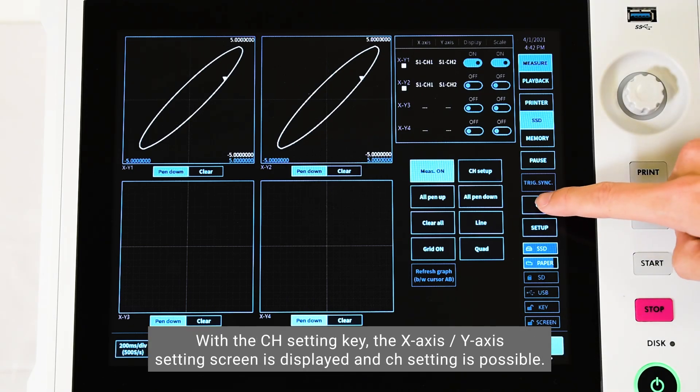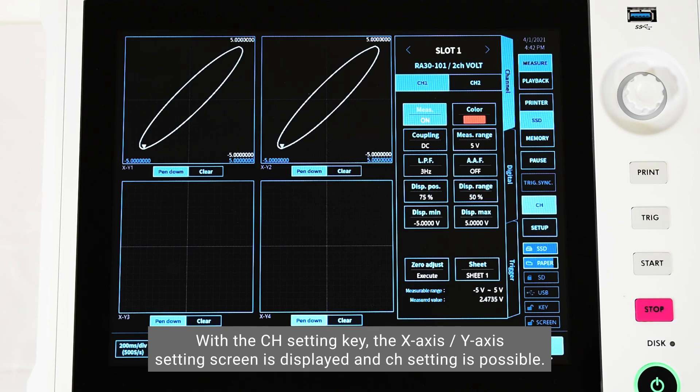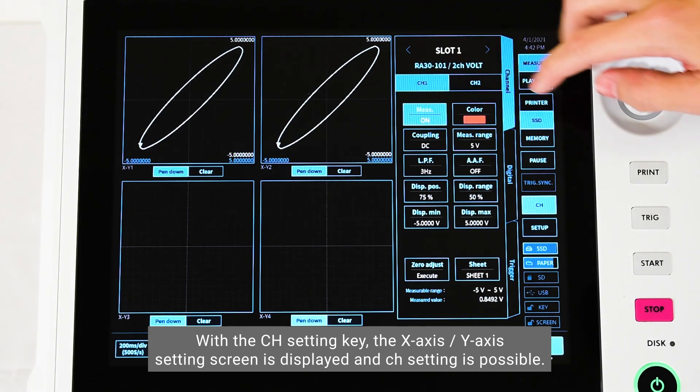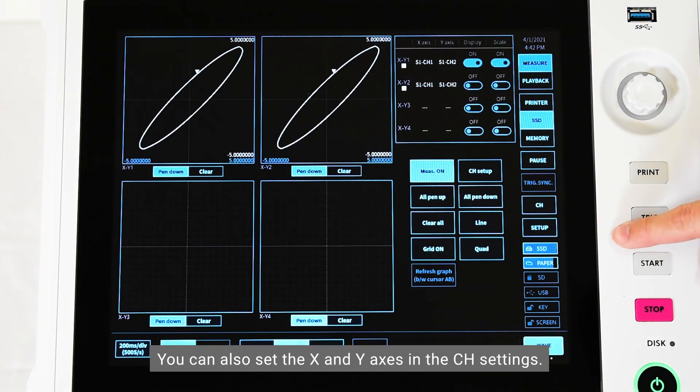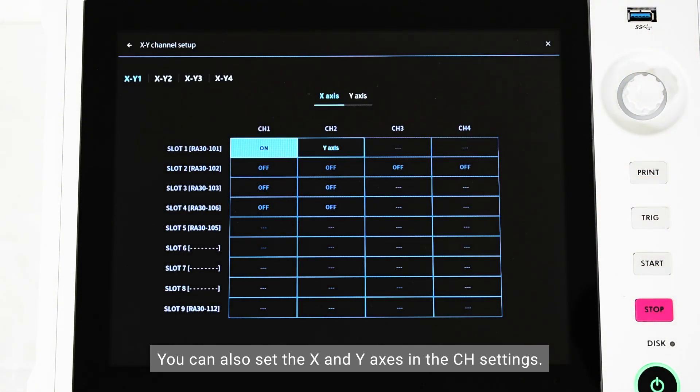The screen switching key switches between one screen and four screen display. With the CH setting key, the X axis and Y axis setting screen is displayed and CH setting is possible. You can also set the X and Y axis in the CH settings.